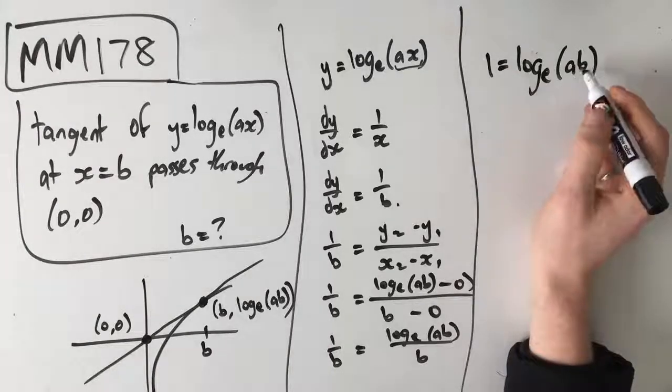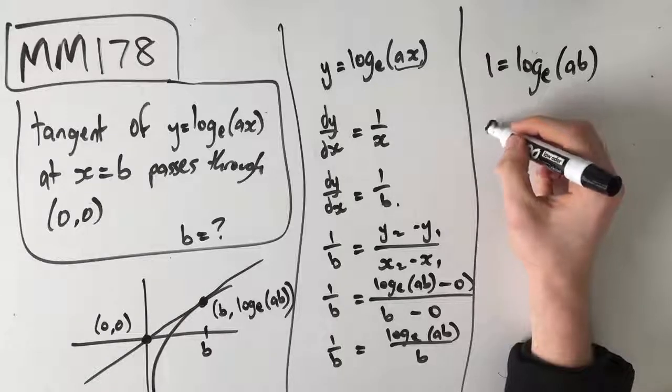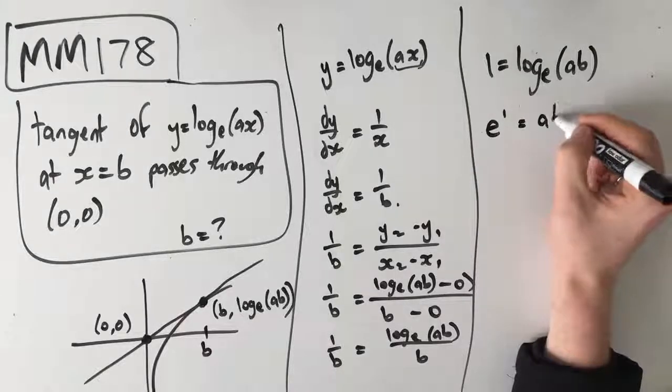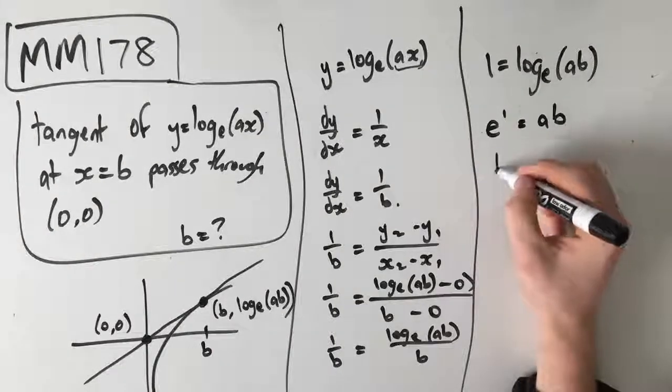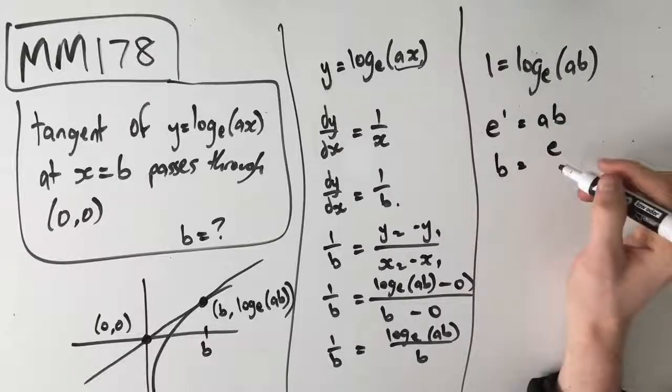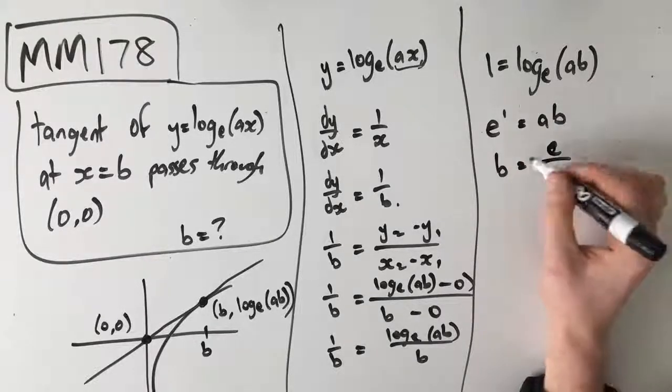Rearranging this, because remember our goal is to find what b is, we get e to the power of 1 is equal to ab, which means that b is equal to e over a, since e to the power of 1 is just e.